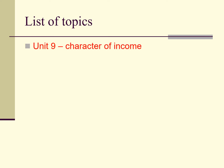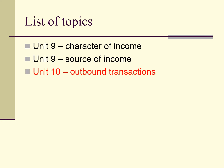The first topic studied in Unit 9 is the classification of income. Next we move to the source of income, also in Unit 9. In Unit 10 we examine the rules for foreign taxation of outbound transactions — these are U.S. companies selling goods and services to foreign countries — and the U.S. foreign tax credit rules for such transactions.